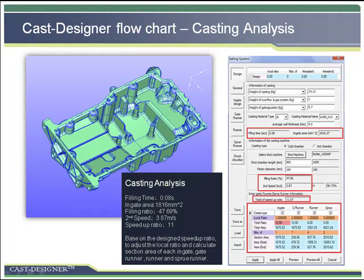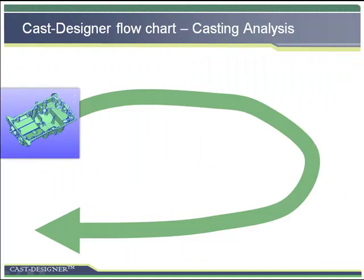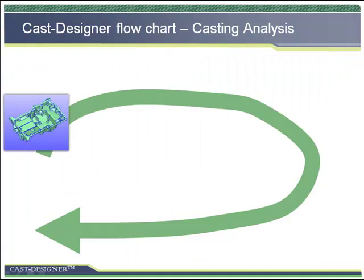The gating system advisor can also help users select the casting machine, such as the chamber length and piston diameter, to define the reasonable filling ratio, second speed velocity, and speed-up ratio of the whole casting system.